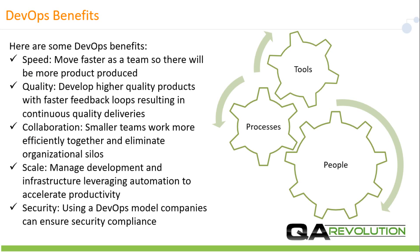Here are a few of the DevOps benefits. Speed: move faster as a team so there will be more product produced. Quality: develop higher quality products with faster feedback loops resulting in continuous quality deliveries. Collaboration: smaller teams work more efficiently together and eliminate organizational silos. Scale: manage development and infrastructure leveraging automation to accelerate productivity. Security: using a DevOps model, companies can ensure security compliance.